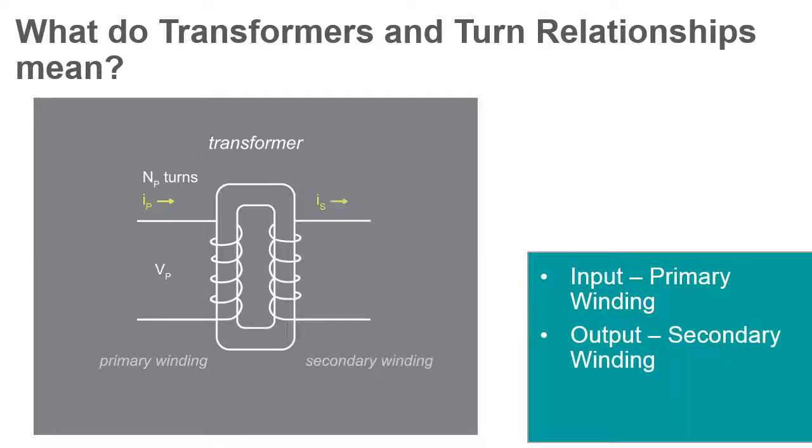The other coil is on the output side and is called the secondary winding. When a transformer transfers energy through electromagnetic induction, the energy it transfers can be more or less the same as the original, or it can be transformed into a different form.